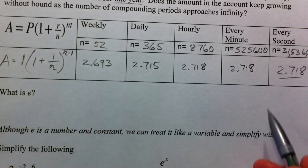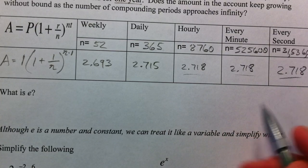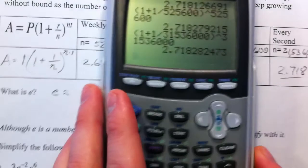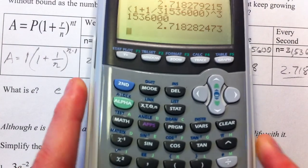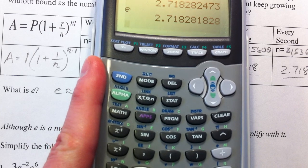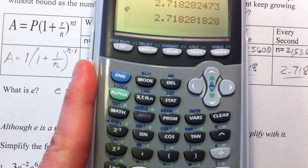What is E? E is this number that we're getting closer and closer to. E is approximately, on your calculator, if you see on the division sign here, it says E right above it. So if you hit second and then the E button, it'll give you sort of what we came close to. 2.718.